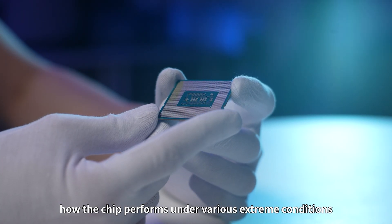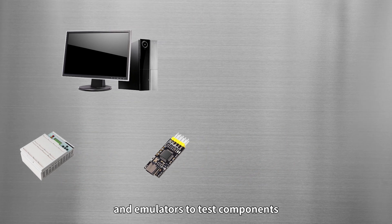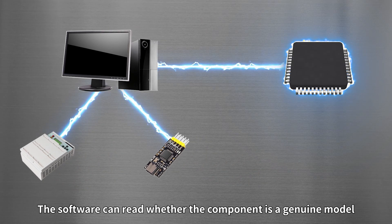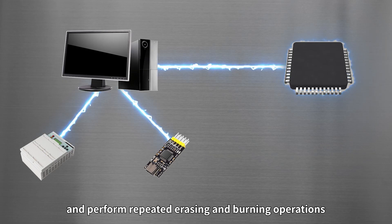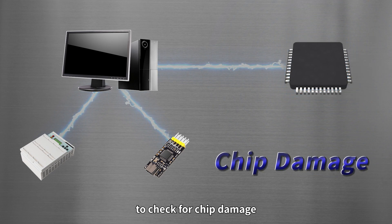Through reliability testing, we understand how the chip performs under various extreme conditions. It uses tools such as programming features and emulators to test components. The software can read whether the component is a genuine model and perform repeated reading and burning operations to check for chip damage.